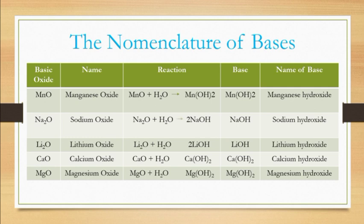The nomenclature of bases. Here we will learn how bases are formed from reactions with water. For example, manganese oxide as the basic oxide — if it reacts with water, the base formed is manganese hydroxide. Sodium oxide as the basic oxide — if it reacts with water, it produces sodium hydroxide. Lithium oxide as the basic oxide — if it reacts with water, it produces lithium hydroxide.